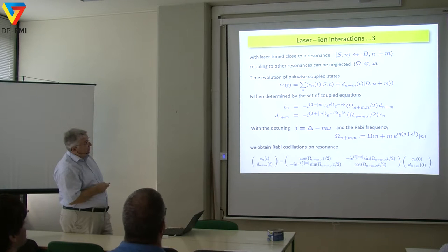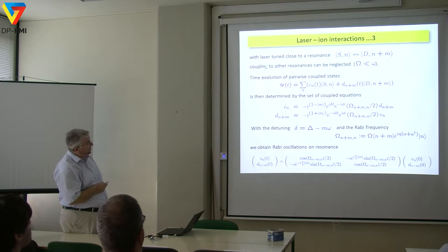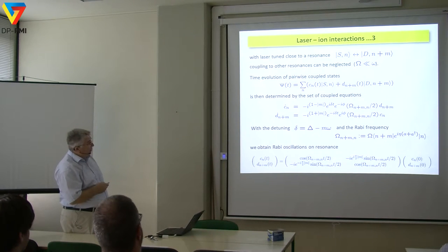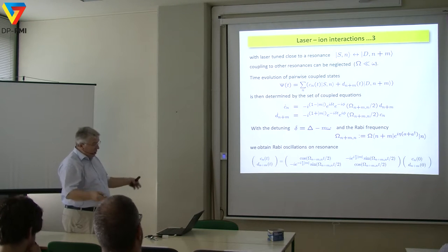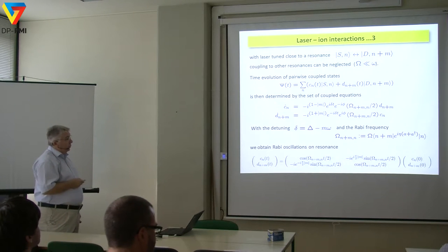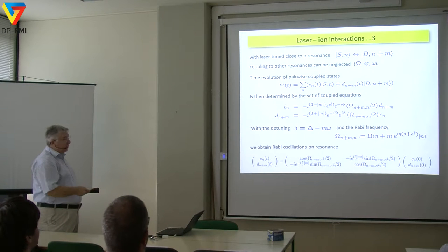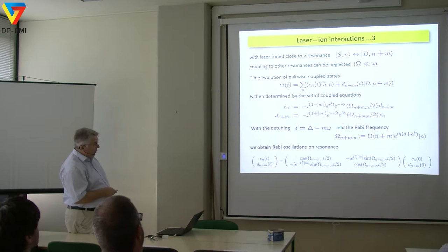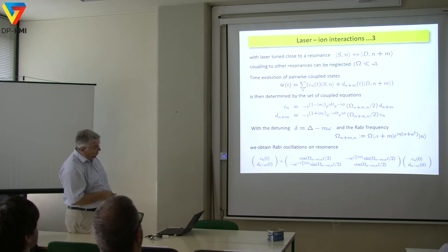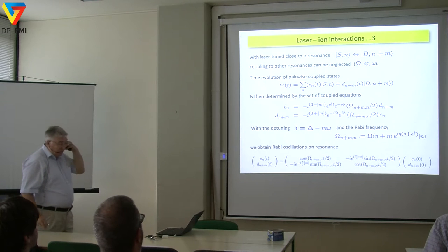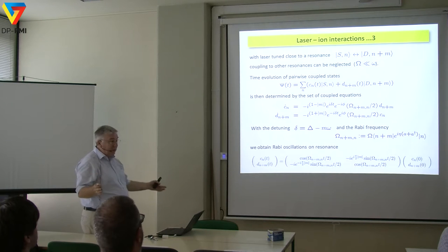When we tune the laser close to the resonance between N and N plus M, between the ground state and the excited state, we couple only to that resonance — we don't couple to any other. The time evolution is then described by pairwise coupled two-level systems. We can calculate the dynamic evolution by these coupled equations, as for a single two-level system, and we introduce the detuning to the respective state M and define the respective Rabi frequency. This includes a Debye-Waller-type matrix element from the harmonic oscillator.